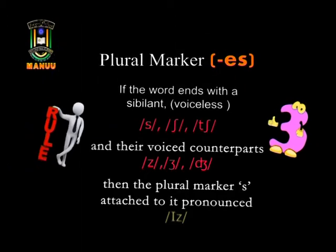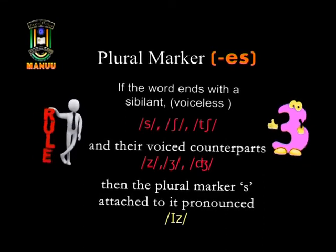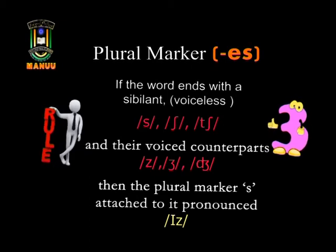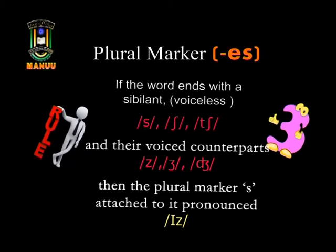Rule three: if the word ends with a sibilant sound — meaning sounds like /ʃ/, /ʒ/, /tʃ/, /dʒ/ that go together — the suffix ES is pronounced /ɪz/, not /s/. These sounds are called sibilant sounds because they always go together. Here, ES has to be pronounced /ɪz/, not just /s/. Look at these examples to understand.